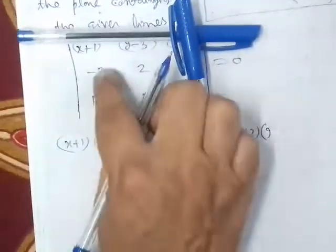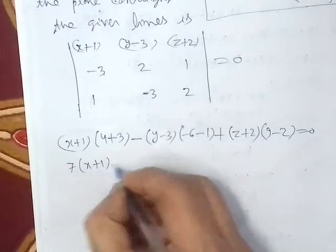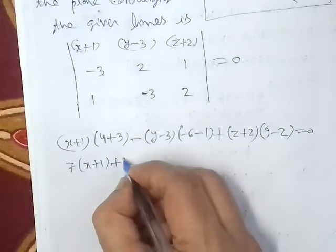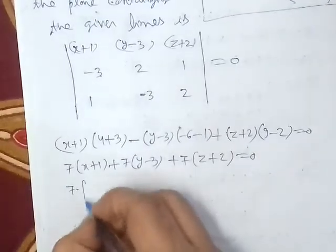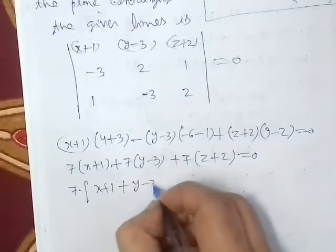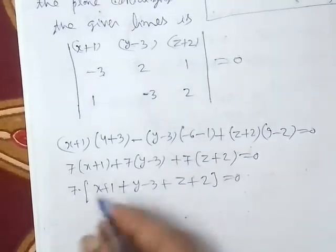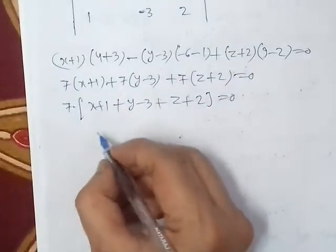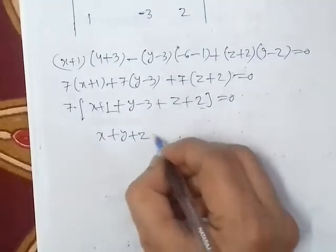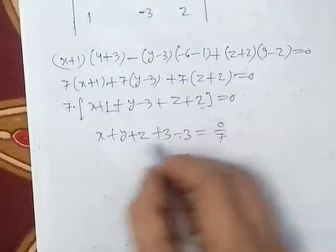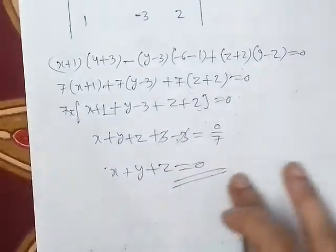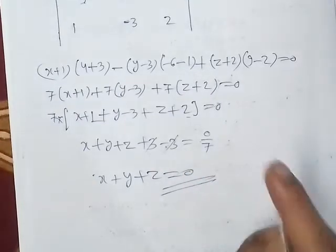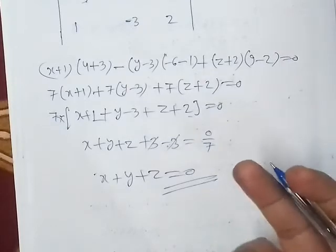After expanding and simplifying the determinant, the right-hand side is zero. The calculated value gives us: 7(x+1) - 7(y-3) + 7(z+2) = 0. Taking out the common factor of 7 and simplifying: (x+1) - (y-3) + (z+2) = 0, which gives us x + y + z = 0. This is the complete result — the plane equation which contains both intersecting lines. Thank you very much.